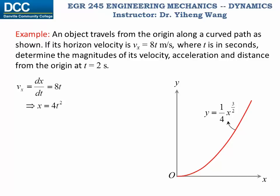And since y is related to x through y equals to one quarter times x to the three halves power, therefore y the vertical position as a function of time is two t to the third power. And therefore the position vector is xi plus yj, which is four t squared i plus two t to the third power j.